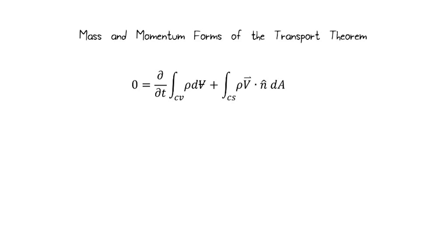So we saw before the two forms of this that are common. One is conservation of mass. The rate of change of mass within the control volume is balanced by the mass that enters and leaves the control volume.